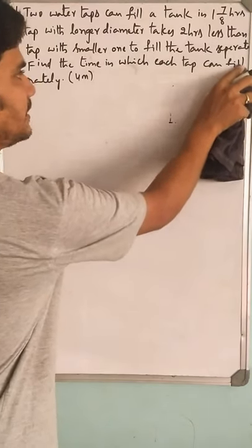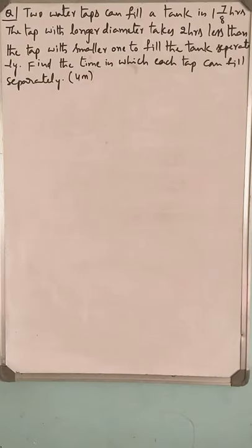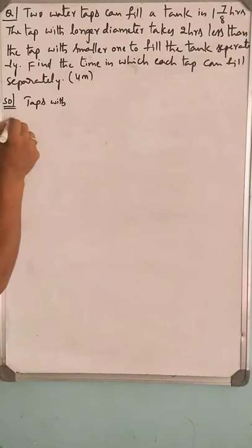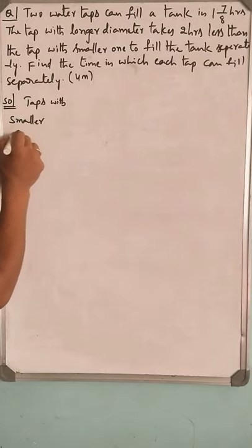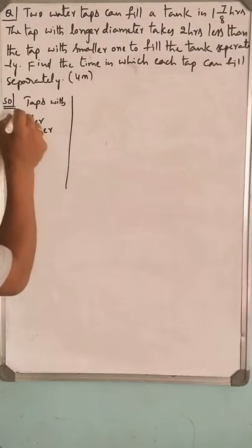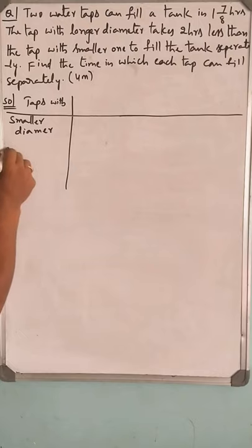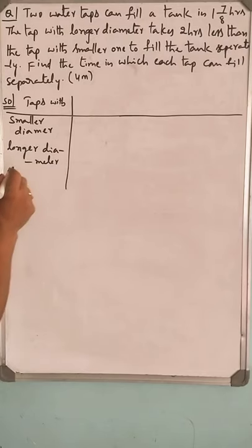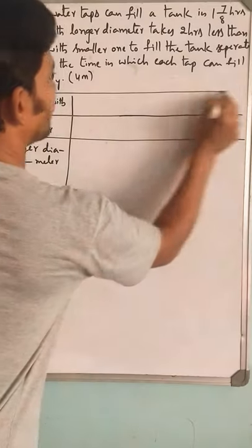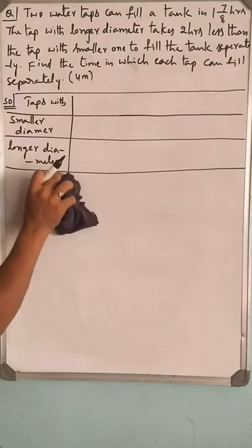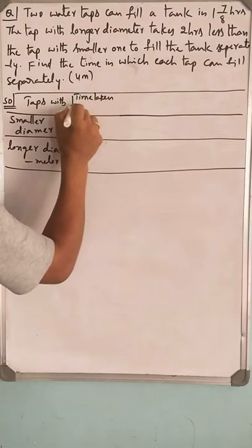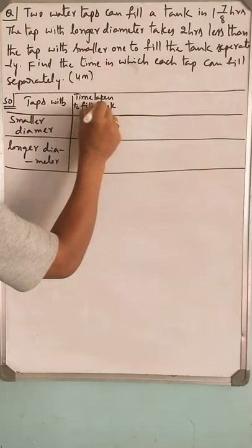Let us go for the solution. I will go through in a tabular column. Taps: number one smaller diameter, longer diameter.